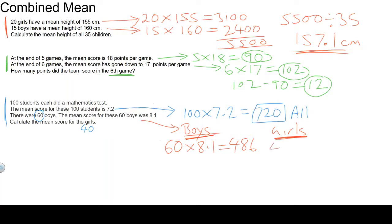We know there's 40 girls. Multiplied by the mean. But we don't know what it is. That's what we're trying to calculate. The total score for the girls we can get by comparing 720 with 486. The difference between 720 and 486: 720 take away 486 leaves you with 234. So the total score for the girls is 234.